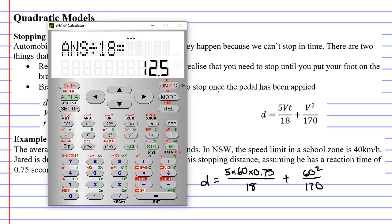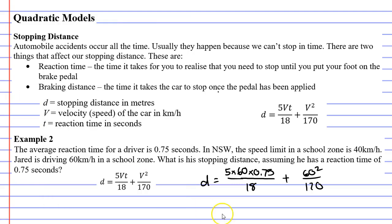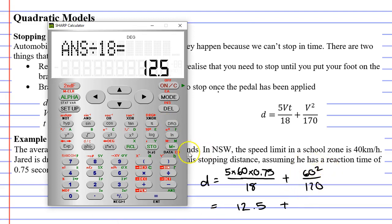And then it's over 18, which is the same as just dividing it by 18. That gives me 12.5. It doesn't hurt to work out each fraction separately. So the first fraction is going to come out to 12.5.